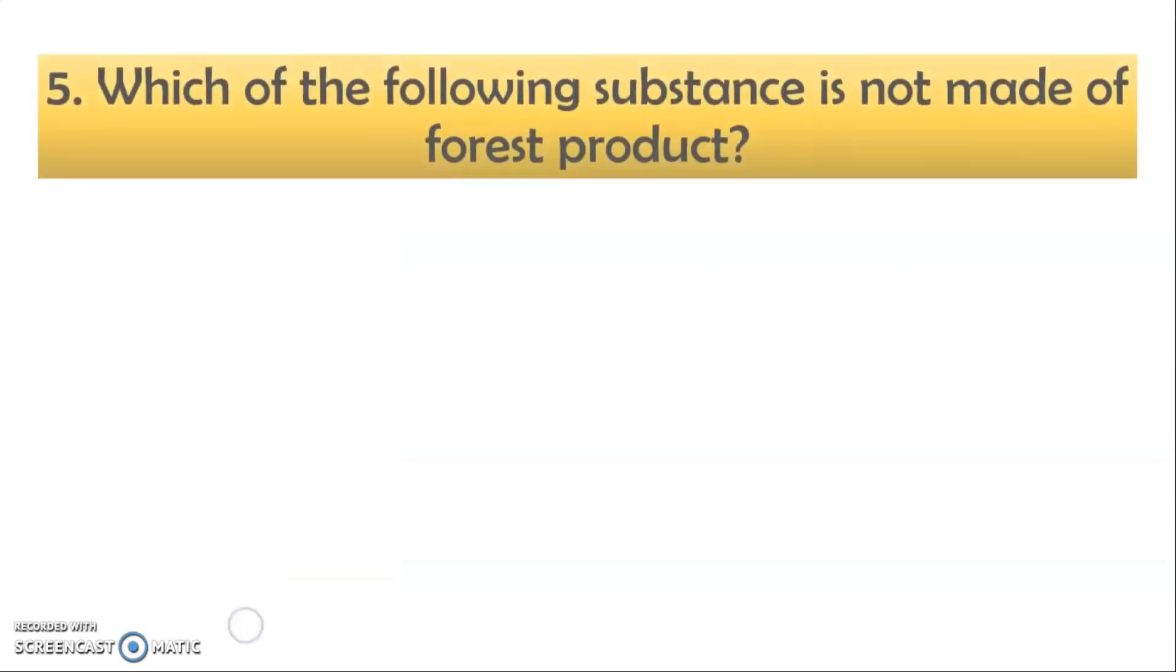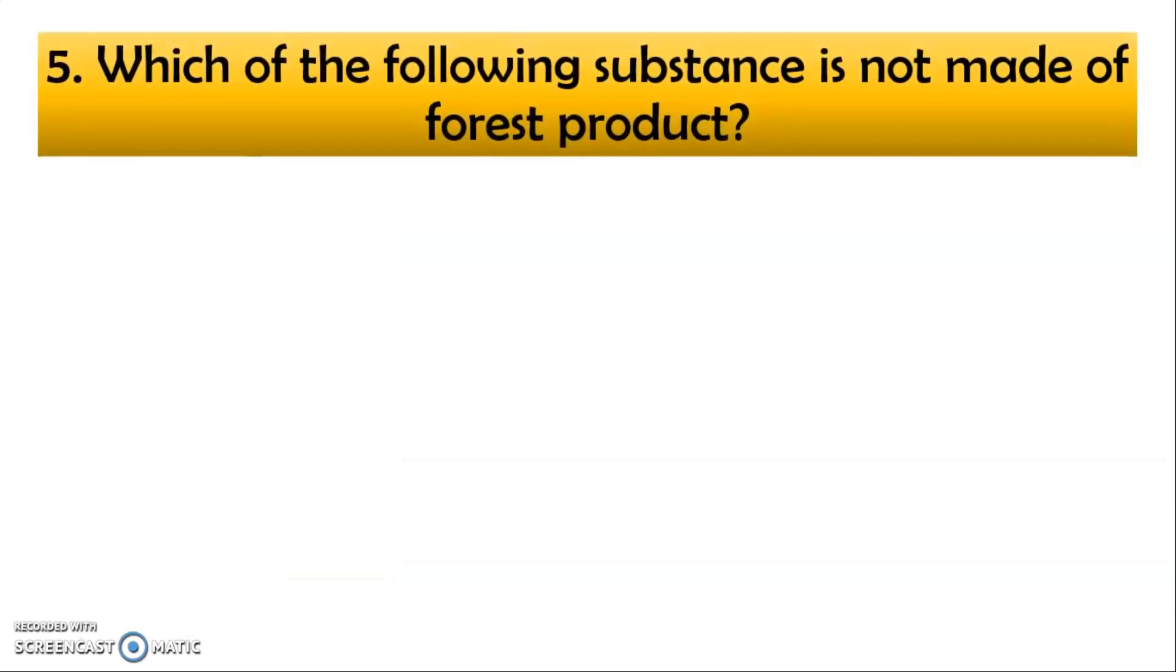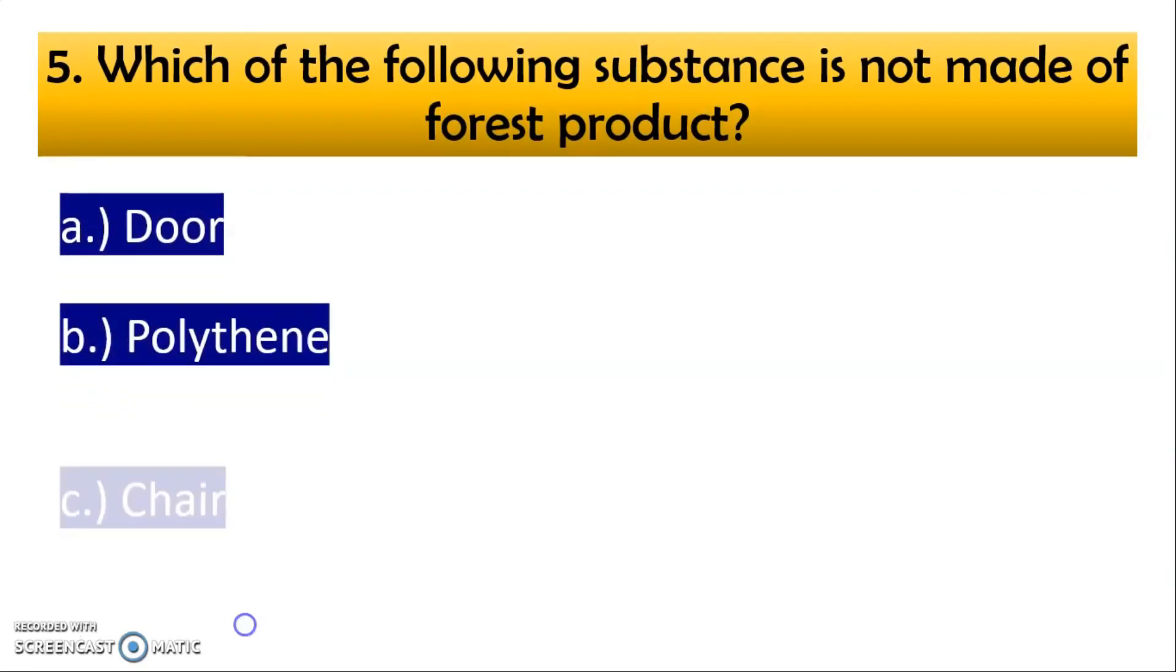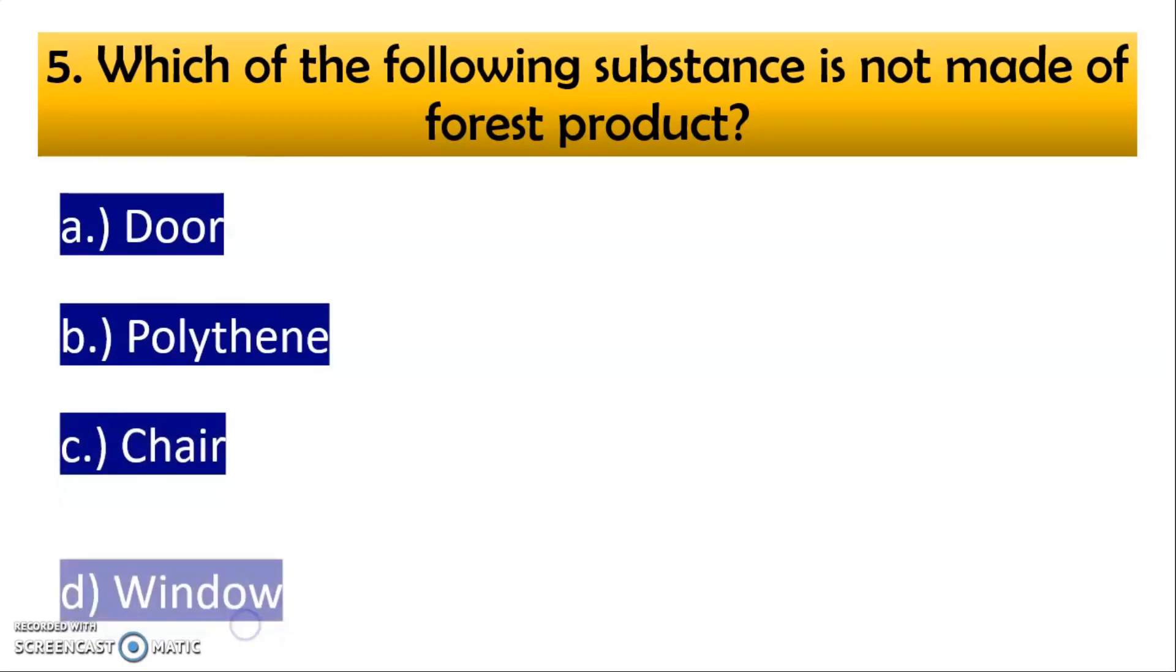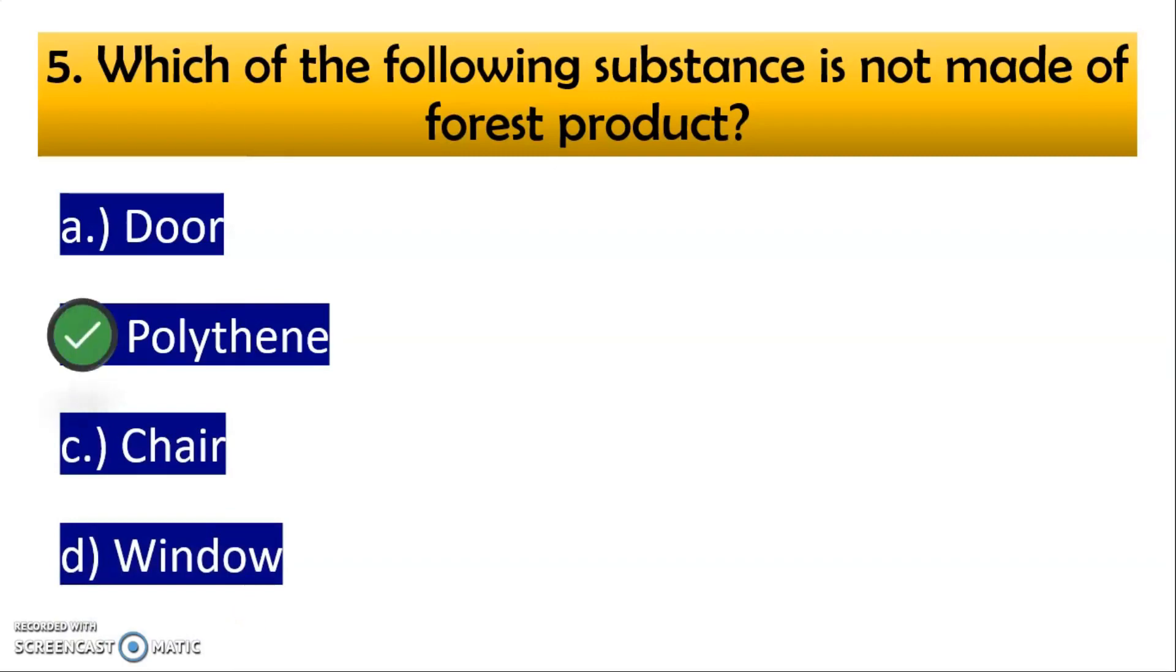Now fifth question, which of the following substance is not made up of the forest product? A option is door, then B option is polythene, then C option is chair, then D option is window. So correct option is B, polythene. If you want to understand this chapter clearly the notes and the chapter reading is available and the link is available in the i button.